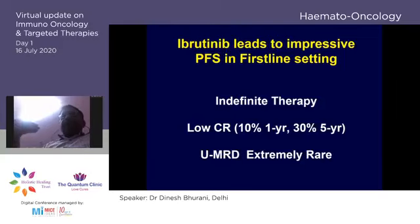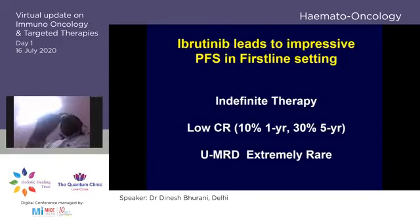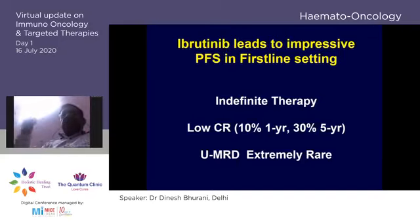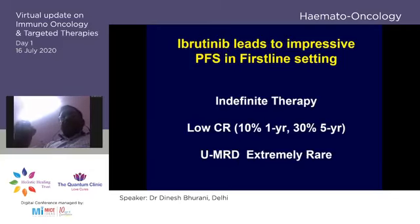Ibrutinib shows very impressive progression-free survival in first-line settings in both younger and elderly patients. However, the major problem is indefinite therapy. As we learned from CML, many patients are non-compliant over years — they begin skipping doses and outcomes suffer. Additionally, CR rates with ibrutinib are only about 30% at five years, and MRD negativity is rarely achieved.